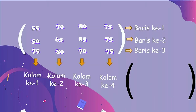Berikutnya, perhatikan matriks yang tadi. Misalkan matriks tadi saya beri nama — atau kalau di matriks disebut dengan notasi. Misalkan saya kasih A. Notasi matriks itu dituliskan dengan huruf besar, tidak boleh dengan huruf kecil. Nanti akan membedakan: kalau huruf besar itu untuk notasi, kalau huruf kecil itu untuk elemen-elemen penyusun dari matriks.